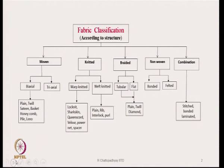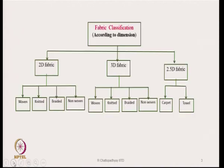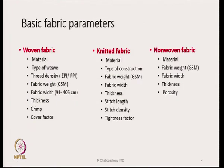We need to know details about the properties of these fabrics so that our selection process does not go wrong. Here is another classification based on dimensions: we have 2D fabrics, 3D fabrics, and 2.5D fabrics. 2D and 3D fabrics can each be woven, knitted, braided, or non-woven. 2.5D fabrics include examples like carpet and towel.